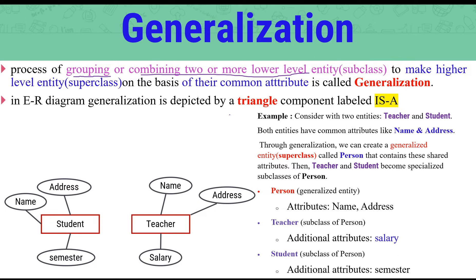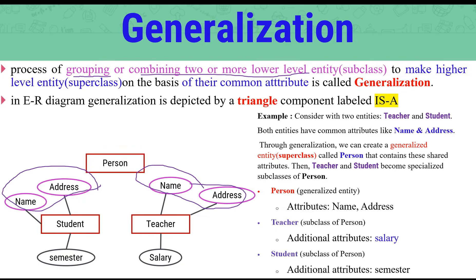In generalization, the common attributes of two or more entities are merged. We identify which attributes are common between them. Student and Teacher both have the attributes Name and Address. Since Name and Address are common to both the Student entity and the Teacher entity, these are the common attributes. These common attributes are extracted and a new higher-level entity is created — the Person entity.